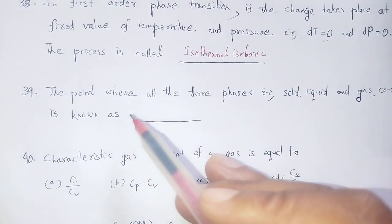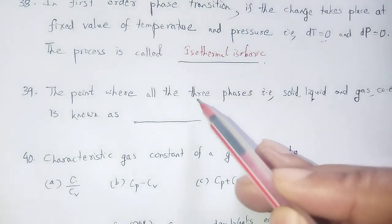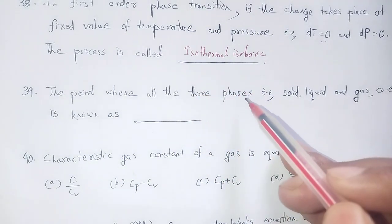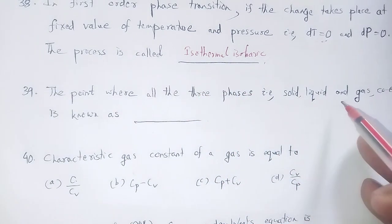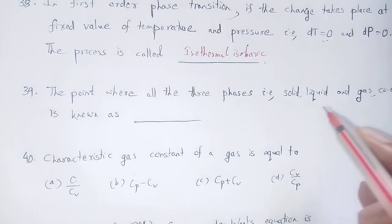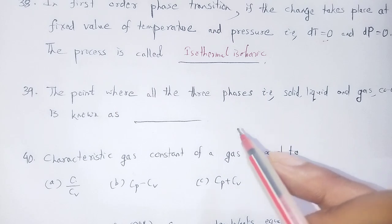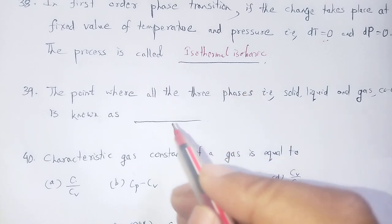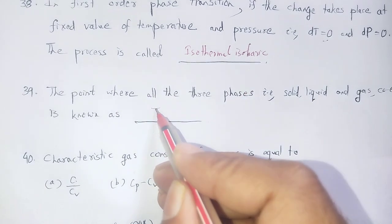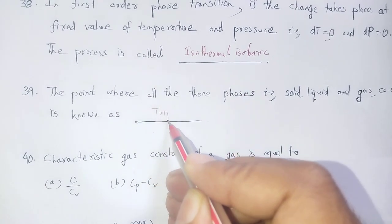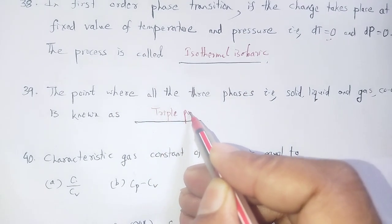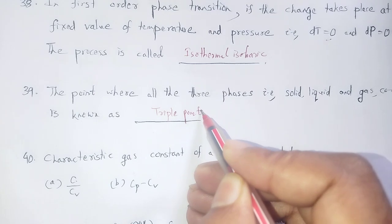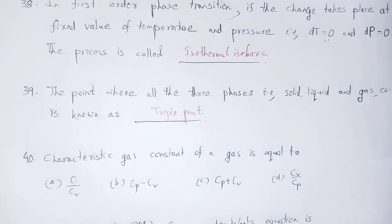The point where all three phases — solid, liquid, and gas — co-exist is known as the triple point.